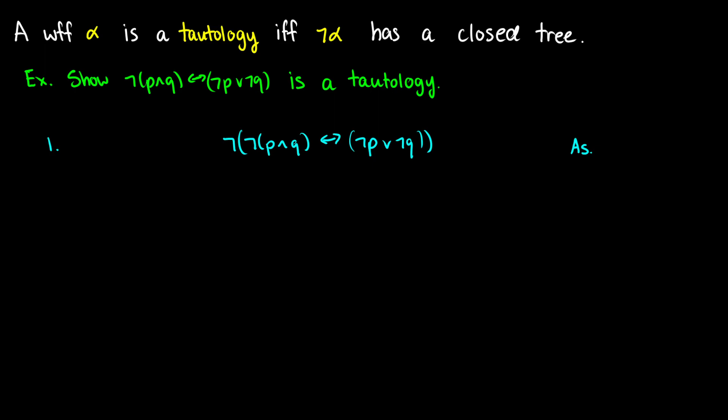Let's start with a tautology. We say that a wff alpha is a tautology, meaning it's always true, if not-alpha has a closed tree. In other words, we're going to assume that it's not a tautology and show that every single branch closes — if it's not a tautology, we get a contradiction, sort of like when we were doing our indirect truth tables before.